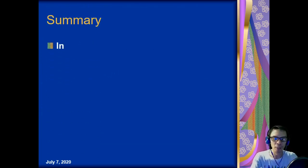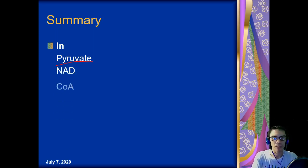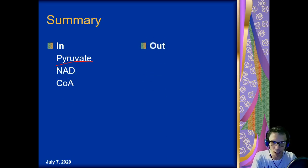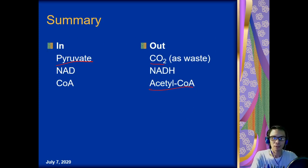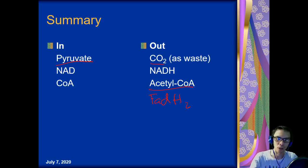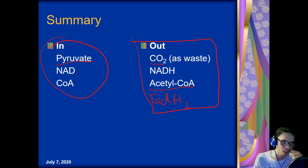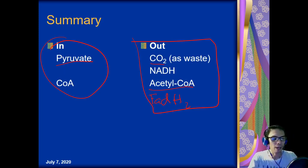In summary for the Krebs cycle: the materials needed are pyruvate, NAD+, and CoA (coenzyme A). The products are CO2, NADH+, FADH2, and ATP. Importantly, the Krebs cycle will not function without oxygen.